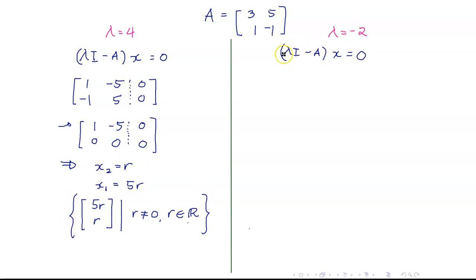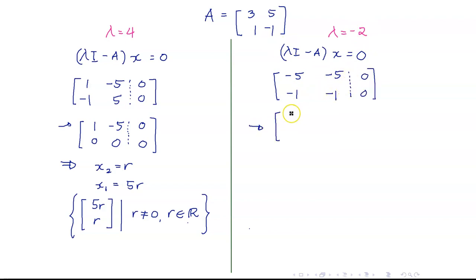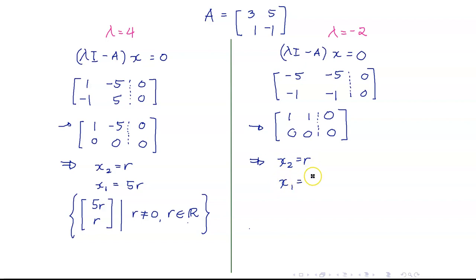For the eigenvalue negative 2, the matrix becomes [negative 5, negative 5; negative 1, negative 1]. When we transform this to REF, we get [1, 1; 0, 0], which means x2 is our free variable, and x1 equals negative r. So the eigenvectors corresponding to lambda equals negative 2 are of the form [negative r, r] where r is any non-zero real number.